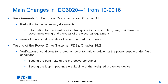In Chapter 18.2 there is a new chapter on testing of the power drive system. Verification of conditions for protection by automatic shutdown of the power supply under fault conditions must be made by testing the continuity of the protection conductor, by testing the loop impedance, and by verifying the suitability of the assigned protective device.